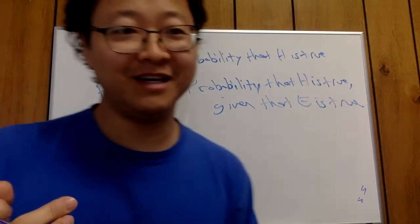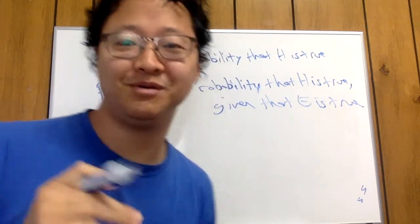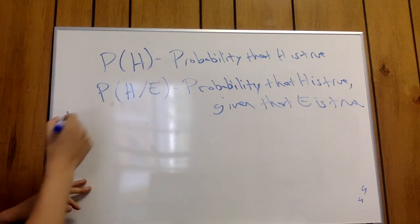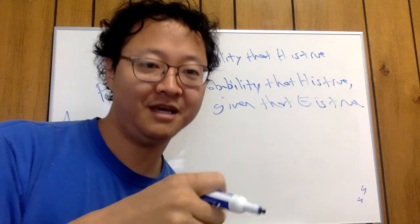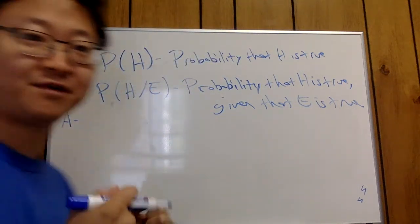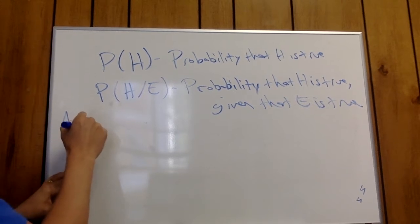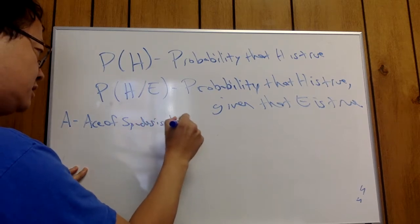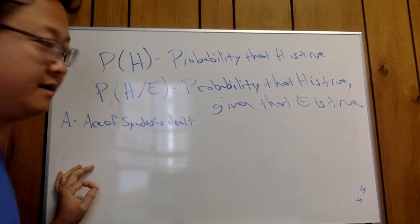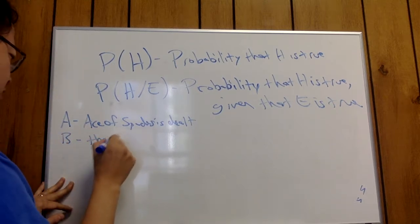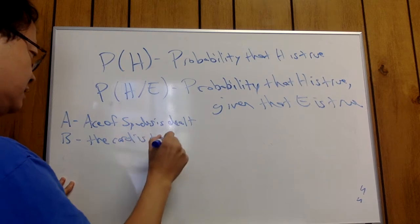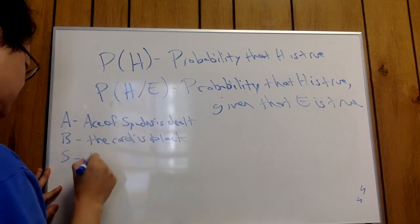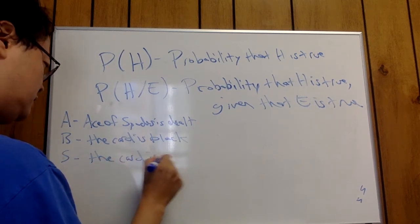So I'm going to have you guys do some exercises just on your own. This will be very simple. Let's use some different letters. Let A be, let's say somebody's dealing cards, and let A stand for the proposition that the ace of spades is dealt, okay? B is the card is black, and let's see what do I have here. S is the card is a spade.